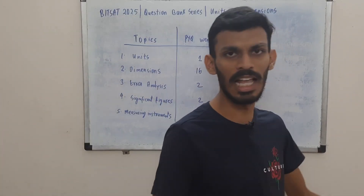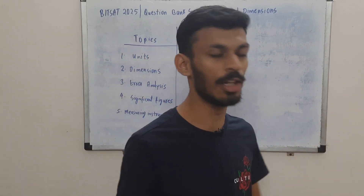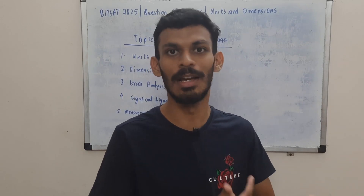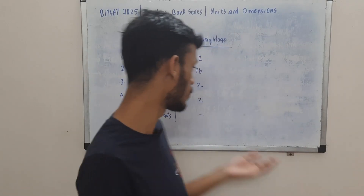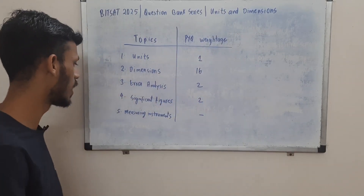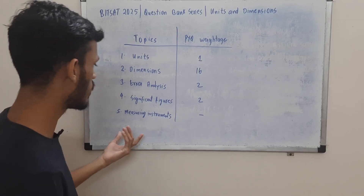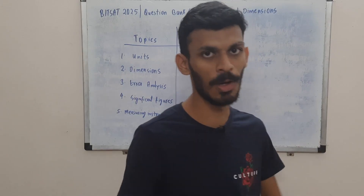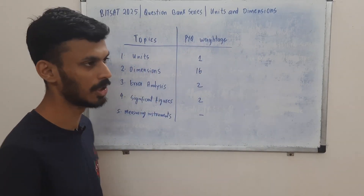We also have error analysis — only two questions from that have been asked — and also significant figures. For example, they might ask you to calculate volume given length, breadth, and height, but it's not just multiplying those three numbers; you also have to consider significant figures. Two questions from there were asked. Measuring instruments — including vernier calipers and micrometer screw gauge — so far no questions have been asked from these particular topics.